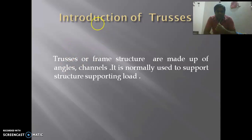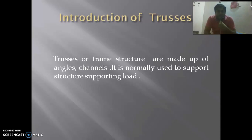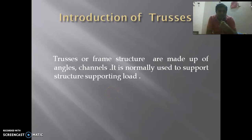Trusses or frame structures are made of angle channels, normally used to support structures bearing load. A structure made of several bars riveted or welded to one another is called a frame structure. The bars used consist of angle section, I-section, and T-section, commonly termed as members. Members may be joined by pin or bolt. A truss is a structure made of several straight members riveted, welded, or bolted together in a network of triangles. For calculation purposes, the joints of the truss are considered hinged or pin-jointed.